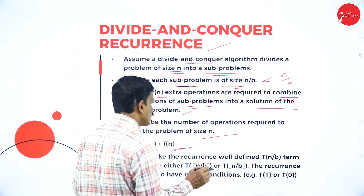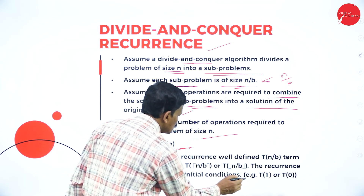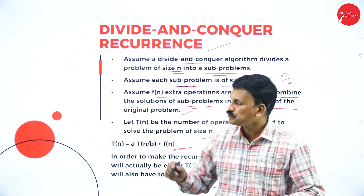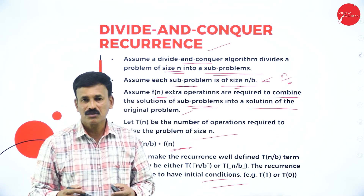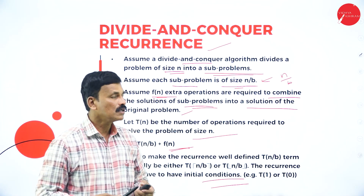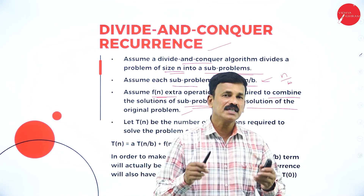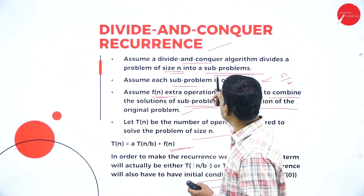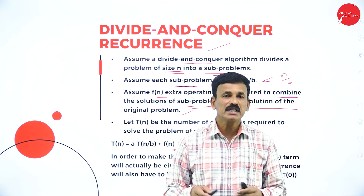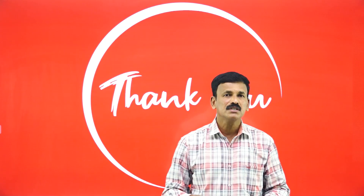The term T(n/b) can be either floor or ceiling of n/b. The recurrence also has initial conditions T(0) or T(1). This is the simple concept of divide and conquer recurrence. You may expect this type of question for 5 marks. You may also expect problems to find solutions for recurrence relations, write a note on divide and conquer algorithms, and problems on properties of relations — reflexive, symmetric, and transitive. Thank you very much.